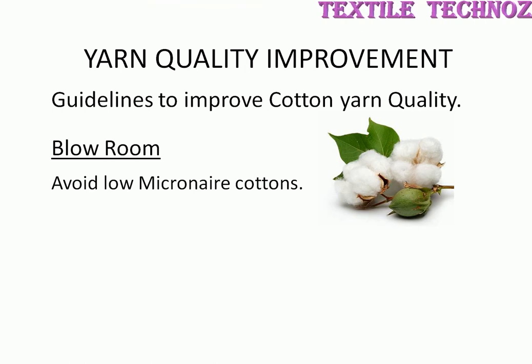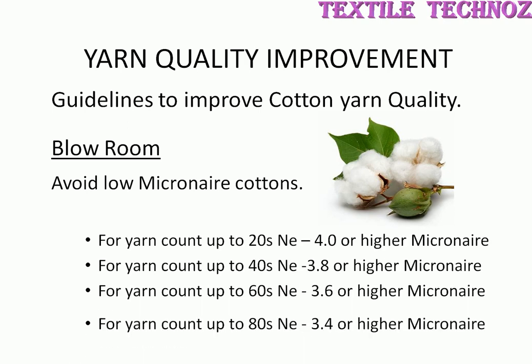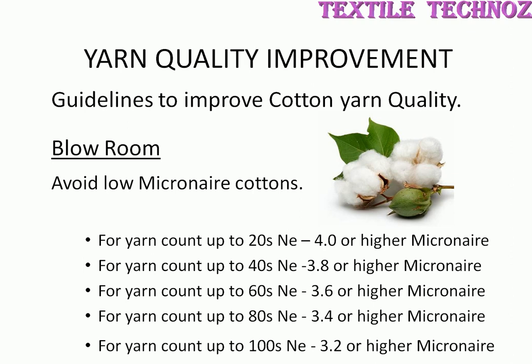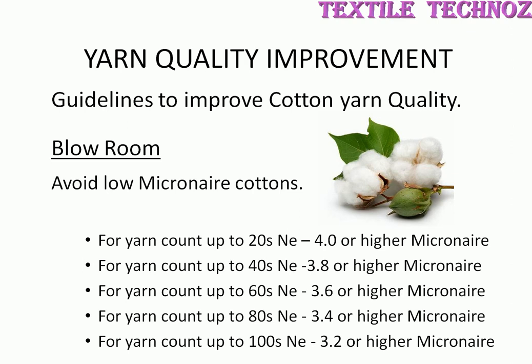In blow room, avoid low micronaire cotton. For cotton up to 20's count, 4 or above micronaire should be preferred. For count up to 40's, 3.8 or higher. For 60's count, 3.6 or higher. For 80's count, 3.4 or higher. For 100's and above count, 3.2 or higher micronaire should be preferred.